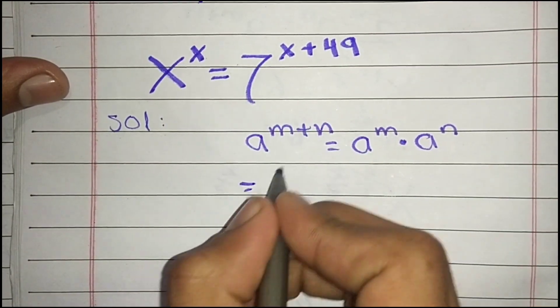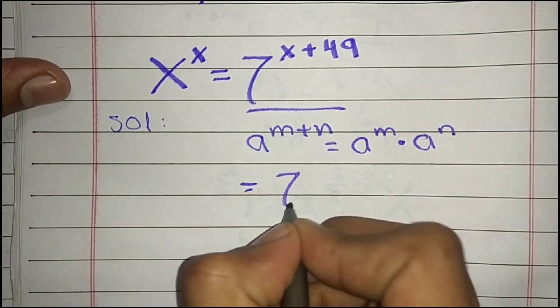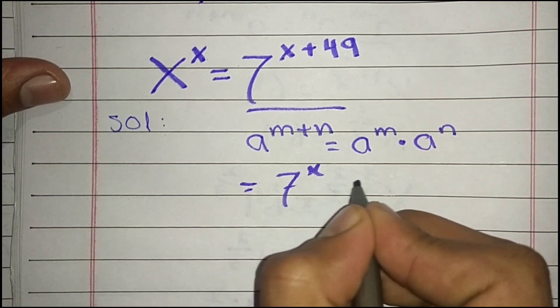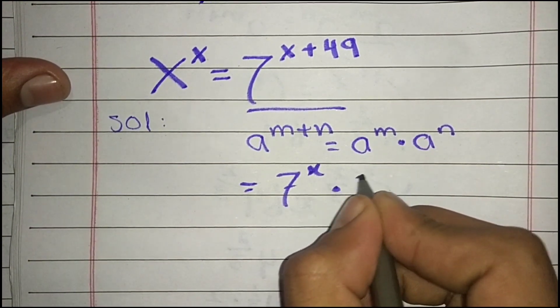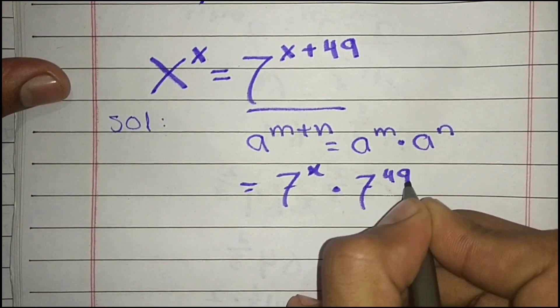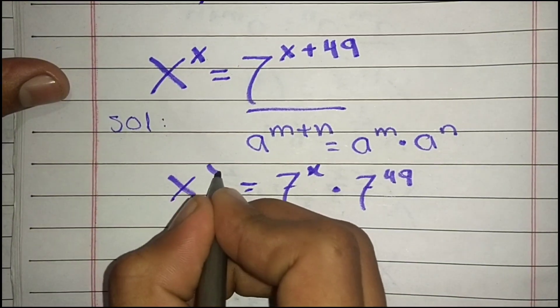So we can write this side of the equation as 7^x × 7^49, which equals x^x.